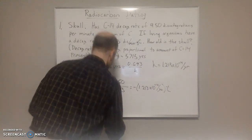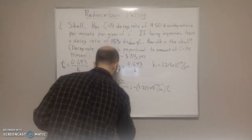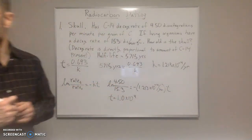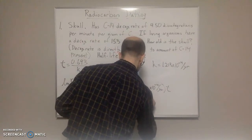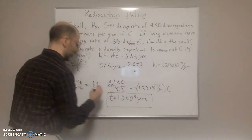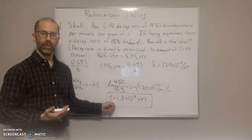When you solve for t, you get t is equal to 1.0 times 10 to the 4 years. So that is the age of the skull according to radiocarbon dating.